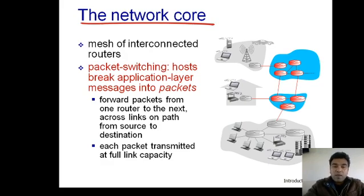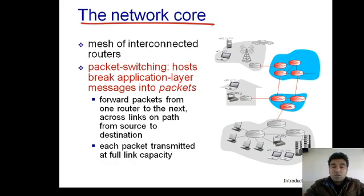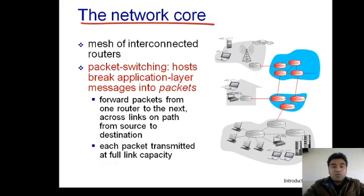In packet switching, which is used in the internet, we divide the complete message into N number of message chunks. Once those chunks reach the network layer, they become packets. That is why it is called packet switching — we divide the complete message into packets, and each packet has the capability to reach its destination on its own, without the help of other packets.